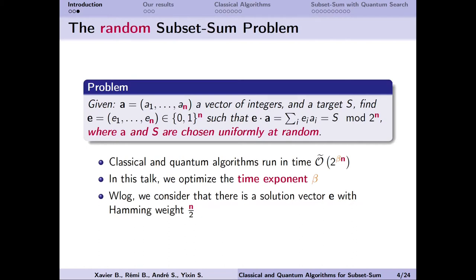In cryptography, we are interested in random instances, not just worst-case instances. Typically, we sample the weights and the targets uniformly at random as n-bit integers. Note that the modulus is now also 2 to the power n, so we expect this to be a hard instance. All known classical and quantum algorithms take exponential time. We are interested in improving the exponent in the time complexity.